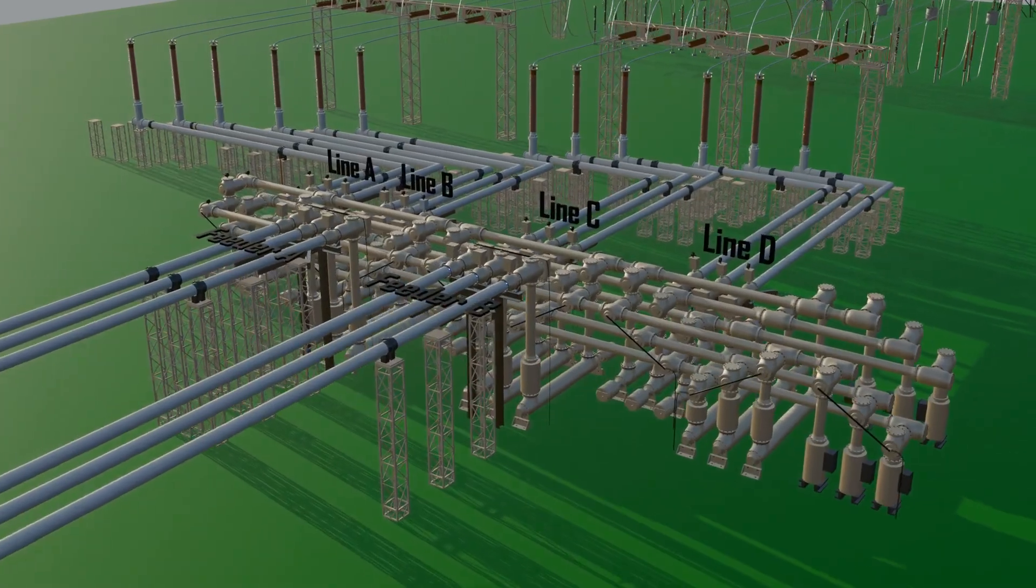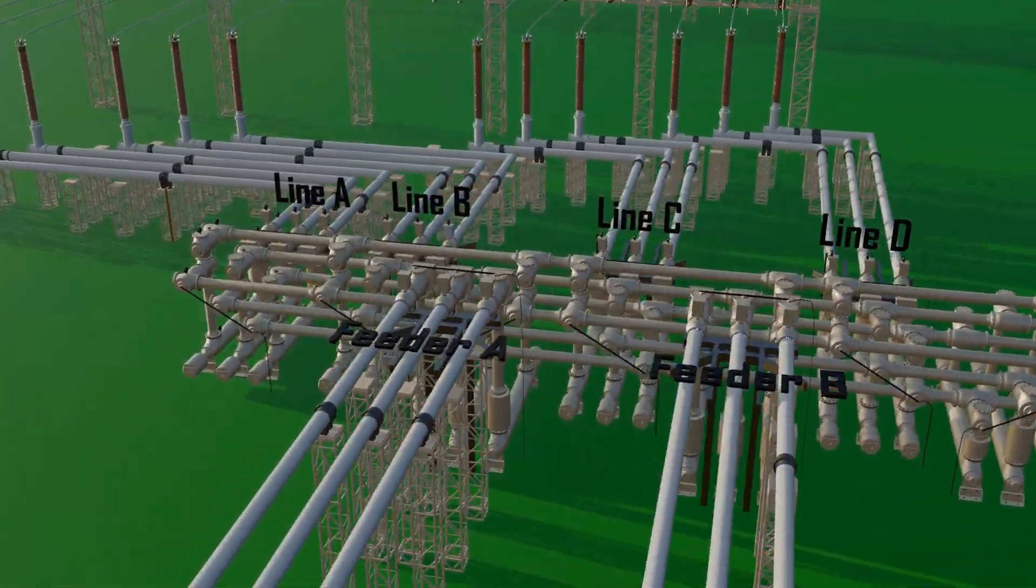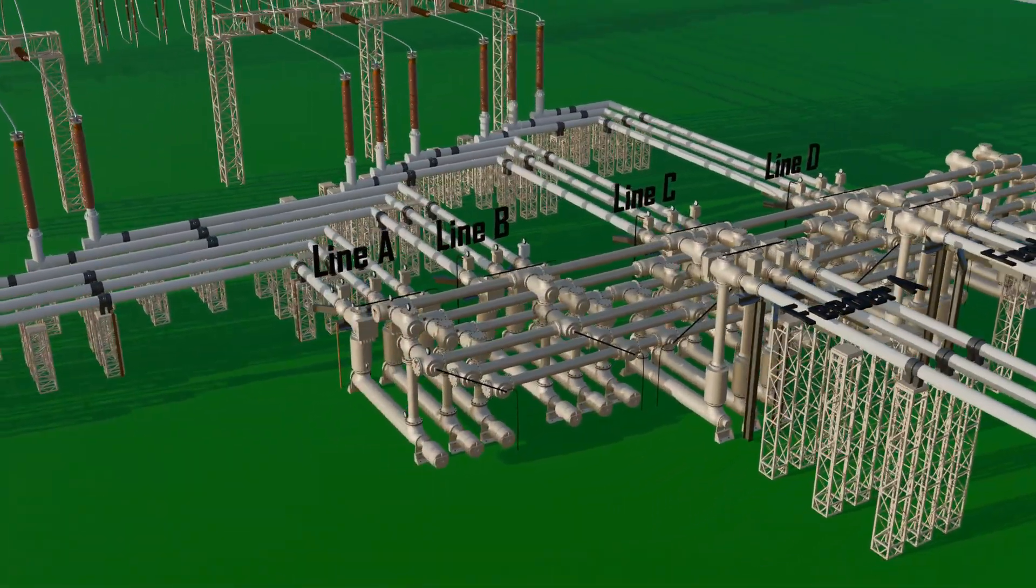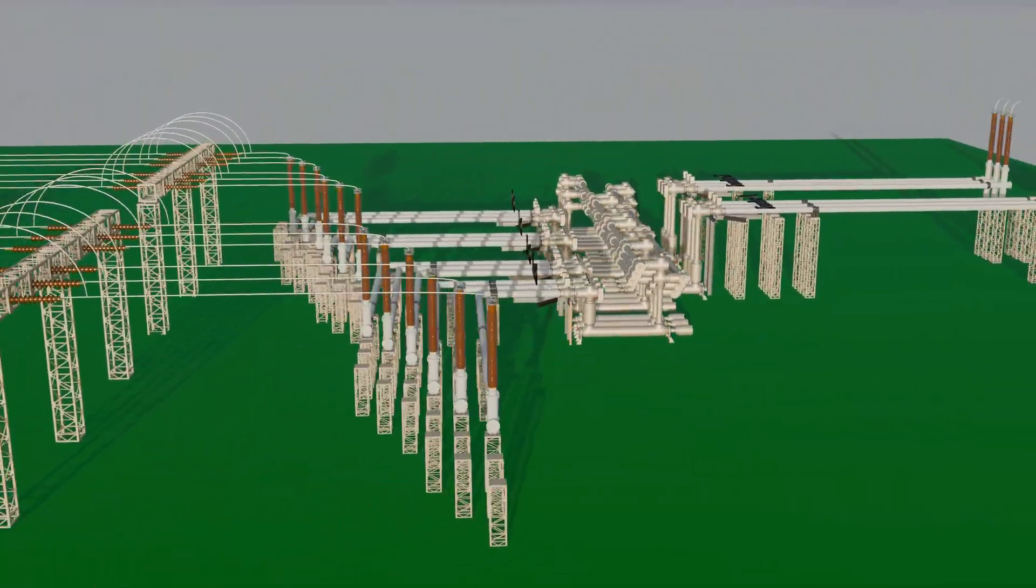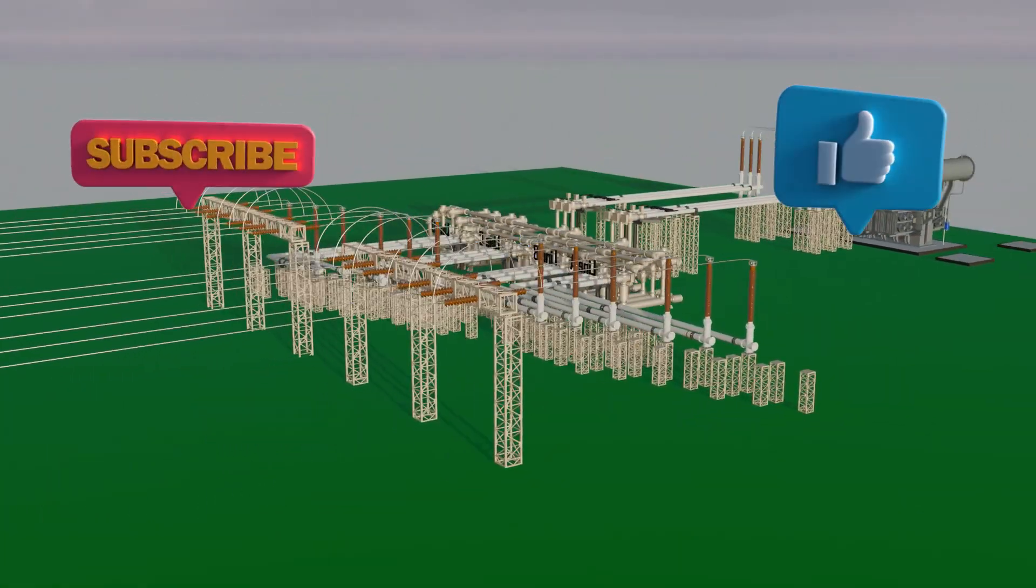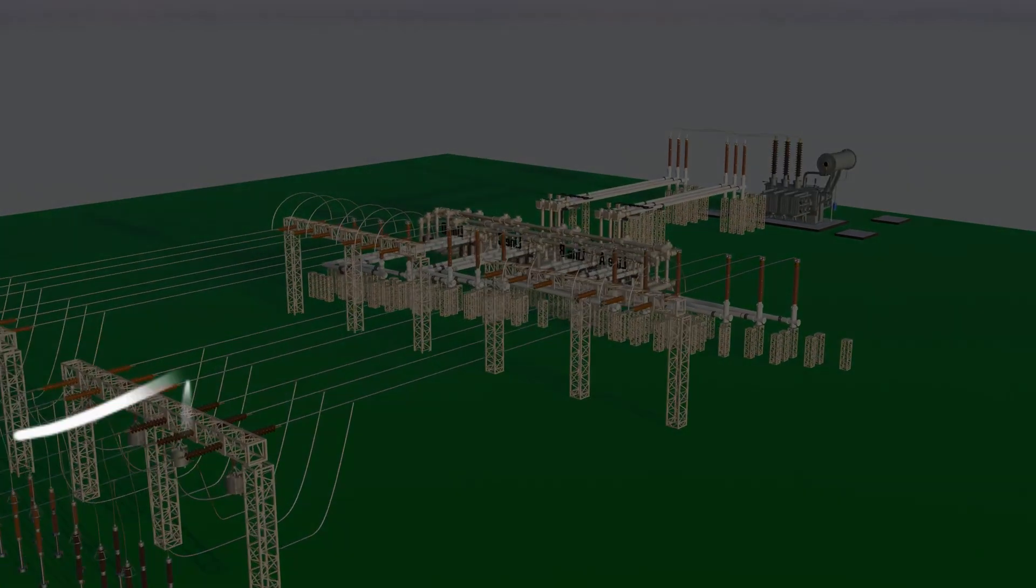In fact, GIS technology allows the entire high voltage network to be built on a compact floor inside a building. Because SF6 gas provides strong insulation and enhances safety, these systems operate reliably even at extremely high voltages. Thanks for watching.